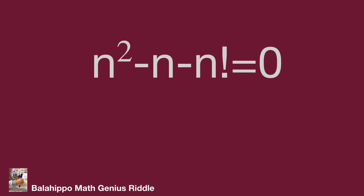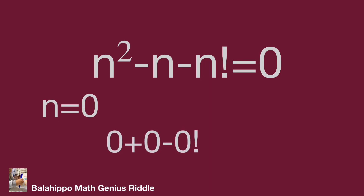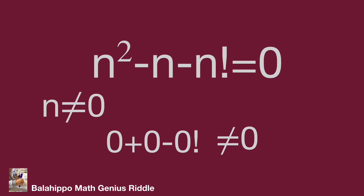Our equation is n squared minus n minus n factorial equal to zero. We know n factorial equals n times (n minus 1) factorial. First, we check whether n equals 0. Substituting n equals 0 gives 0 plus 0 minus 0 factorial, and since 0 factorial equals 1, this does not equal zero. So n is not equal to 0.